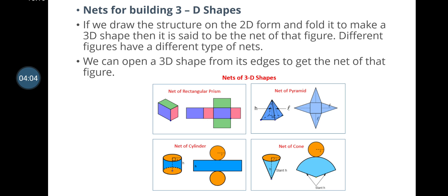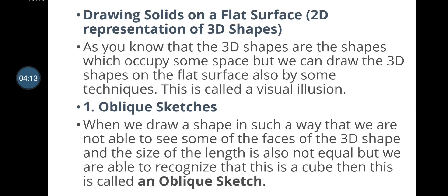Drawing solids on a flat surface — 2D representation of 3D shapes: although 3D shapes occupy some space, we can draw them on a flat surface using certain techniques. This is called a visual illusion. The first method is oblique sketches.